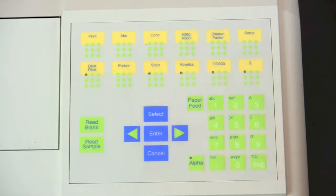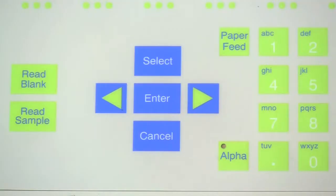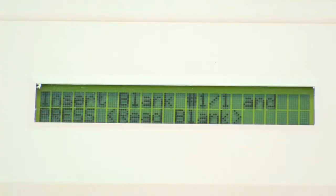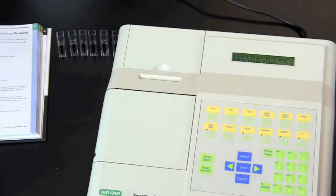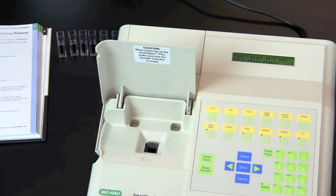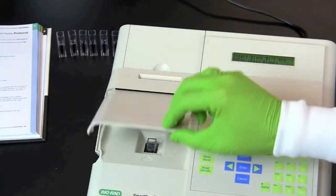To determine the protein concentration using a spectrophotometer, select for the Bradford assay. When asked to insert blank into the spectrophotometer, insert the cuvette labeled control. Use the blank to set the spectrophotometer to zero absorbance or 100% transmittance.